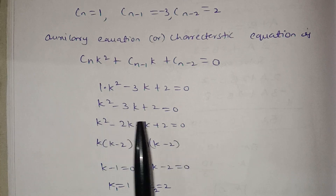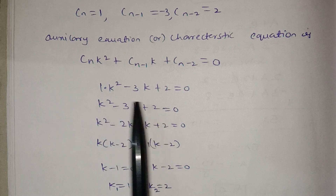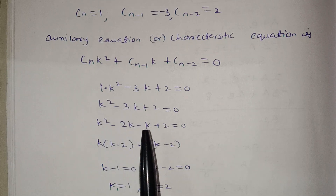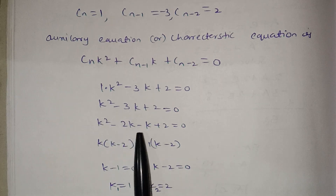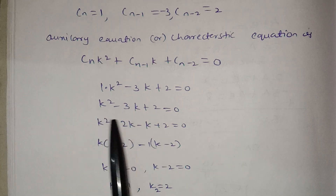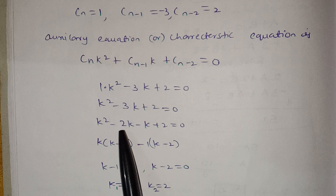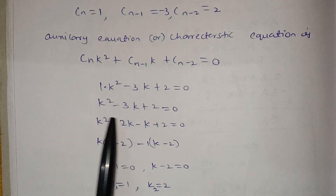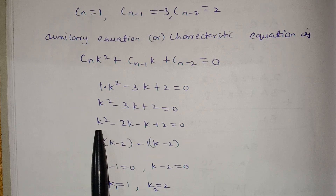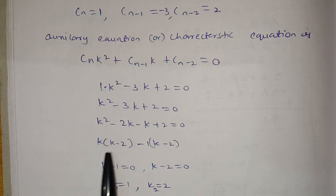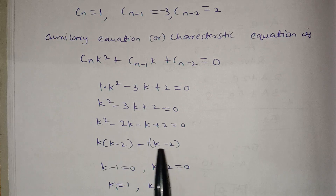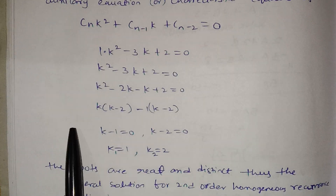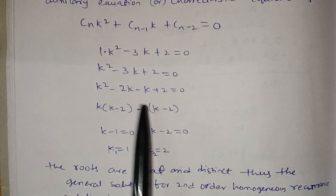Now we split the middle term. k² minus 3k plus 2 equals 0. We split minus 3k as minus 2k minus k. Factoring: k(k minus 2) minus 1(k minus 2) equals 0, so (k minus 1)(k minus 2) equals 0. Therefore k1 equals 1 and k2 equals 2.